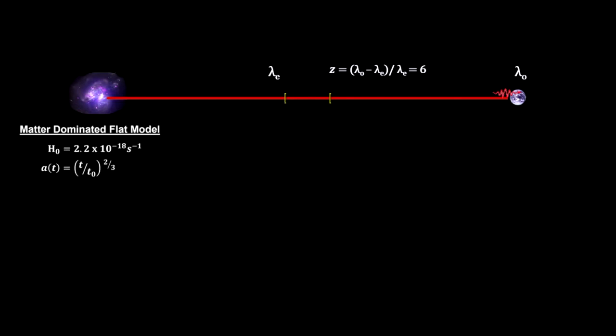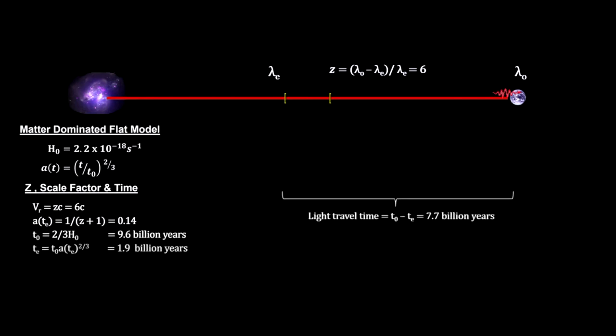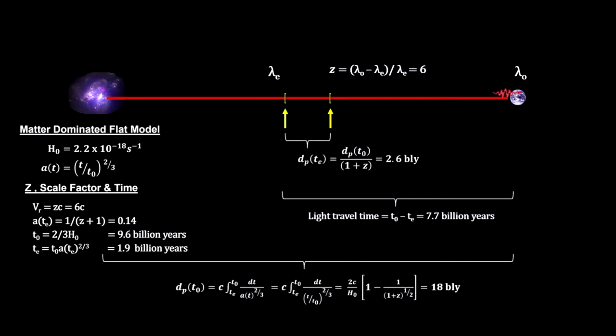Once a model for the change in the cosmic scale factor over time is specified, redshift gives us a great deal of information. For now, we'll assume a flat, matter-dominated universe. First, redshift gives us an object's receding velocity. With our model, we have the object moving away at 6 times the speed of light. Redshift also gives us the actual cosmic scale factor at the time the light was emitted. It gives us the age of the universe at the time the light was emitted. And it gives us the amount of time the light was traveling. Redshift gives us the distance to the object at the current time, and it gives us the distance to the object at the time the light was emitted. You can see why astronomers rely so heavily on redshift measurements.